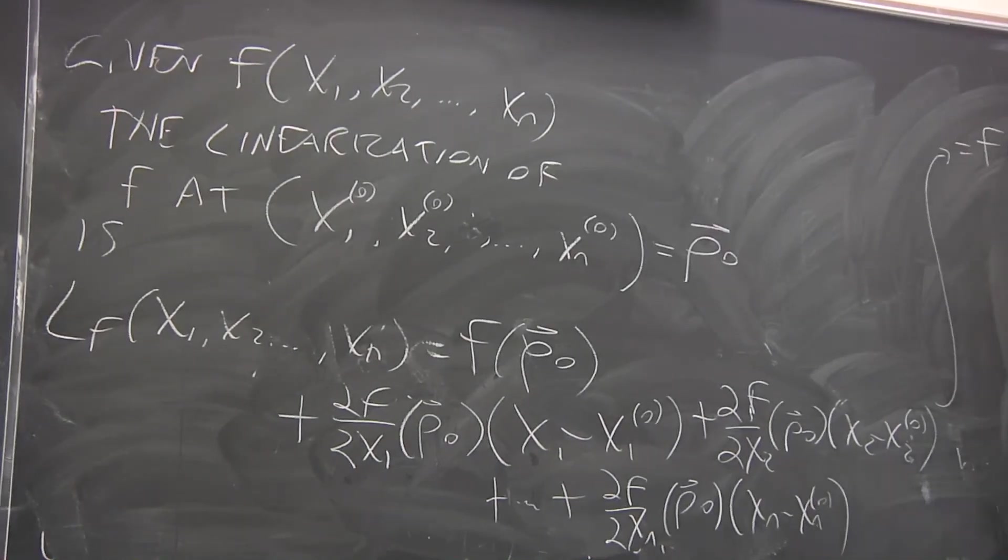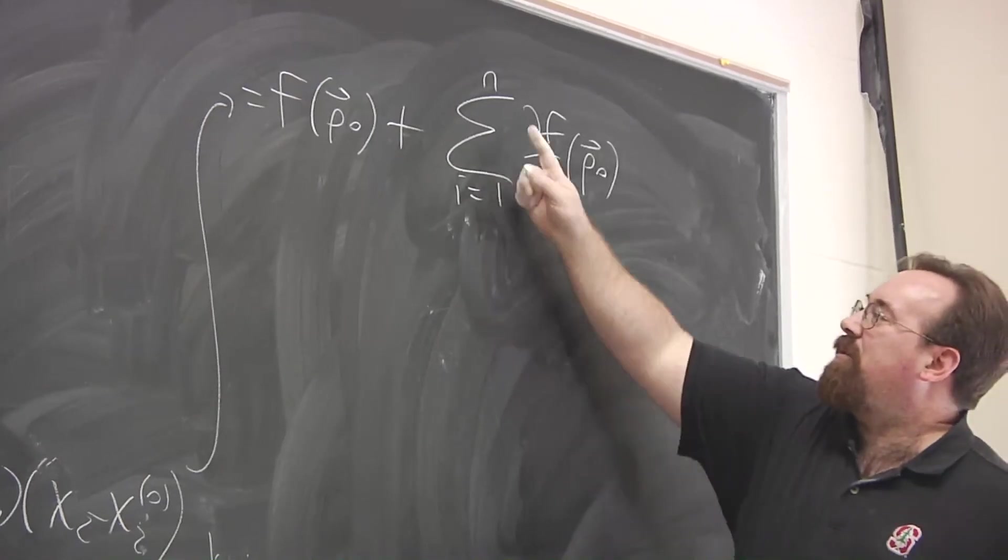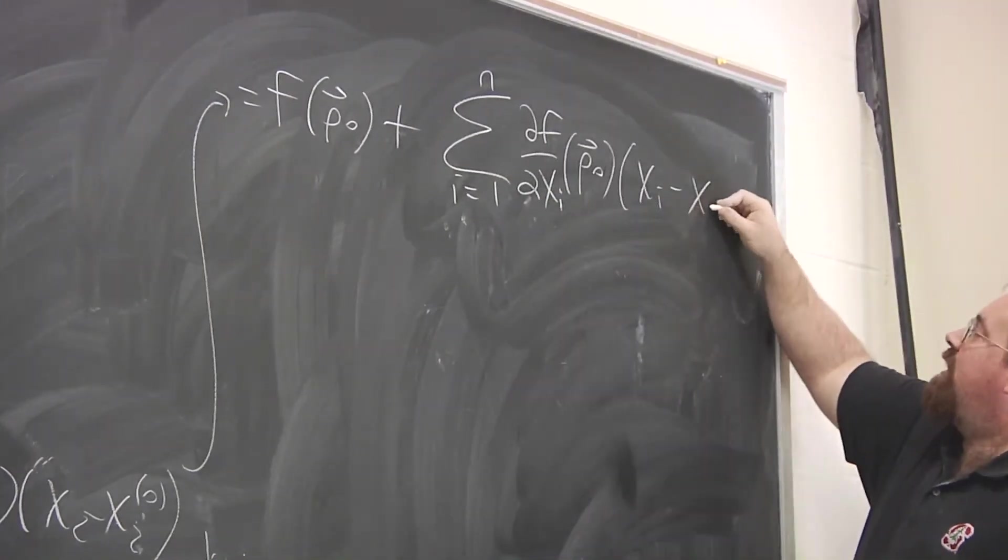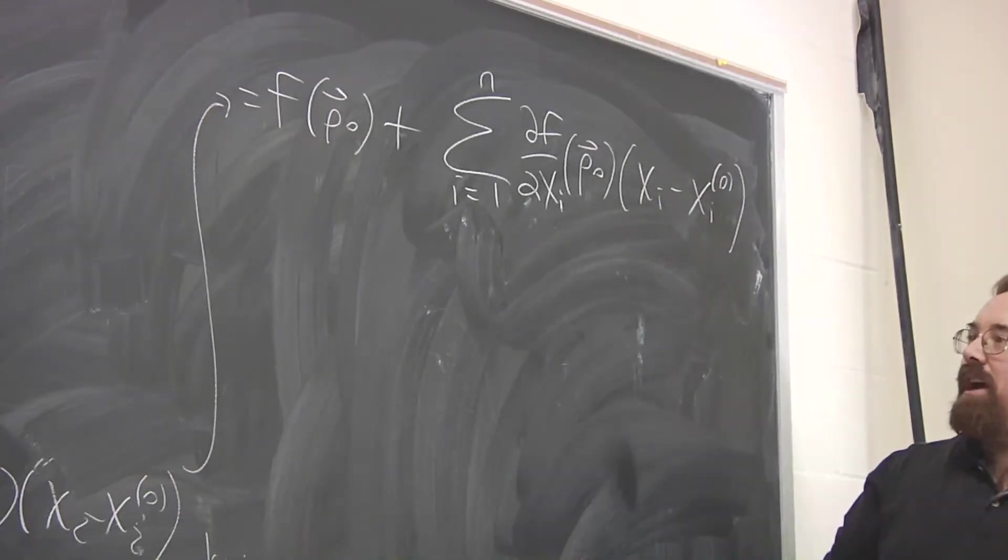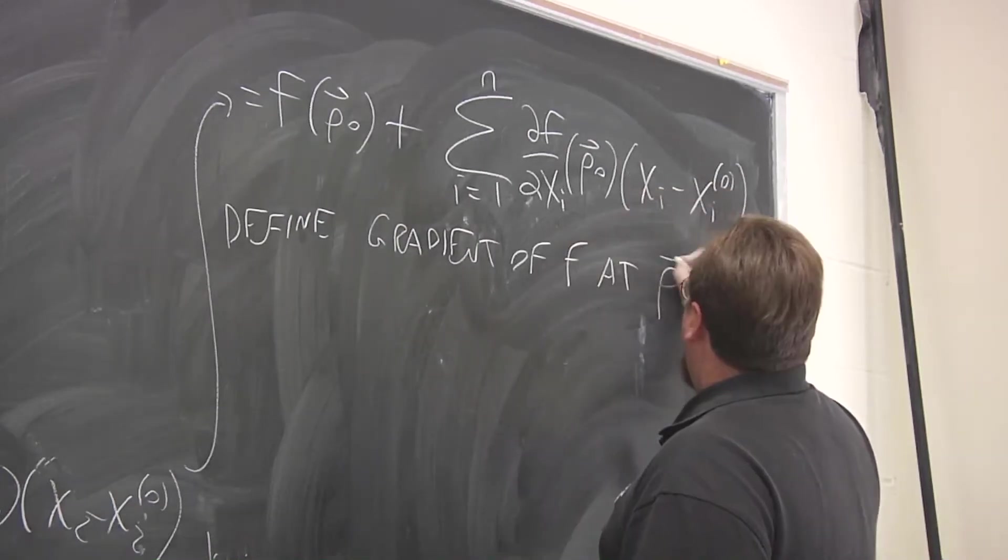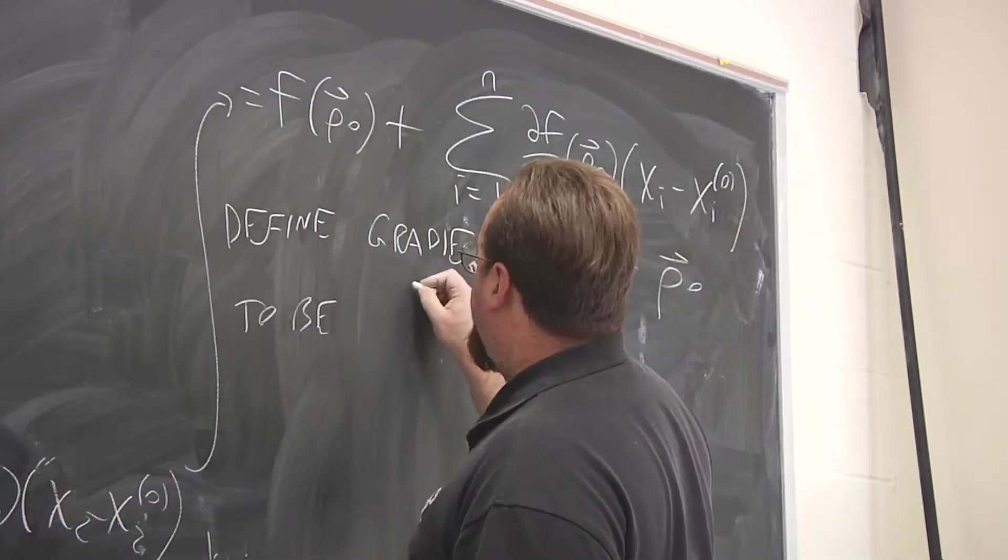So different way we can write that. Of course, we could use our old friend from 169 sigma notation. So we're summing from i equals 1 to n partial with respect to xᵢ times the change in coordinate i. So that's another way of writing it. The way I actually prefer to write it is this. We define the gradient of f at this point, p naught, to be this vector.